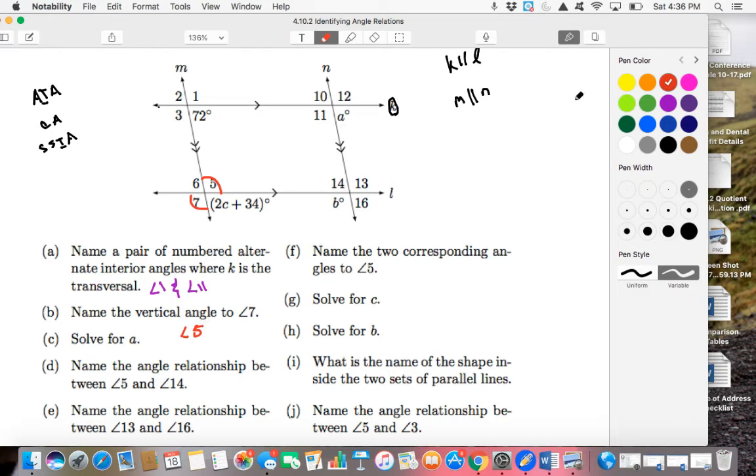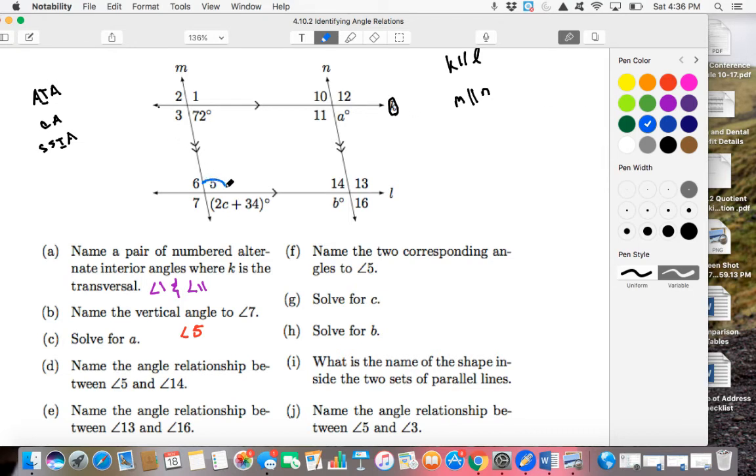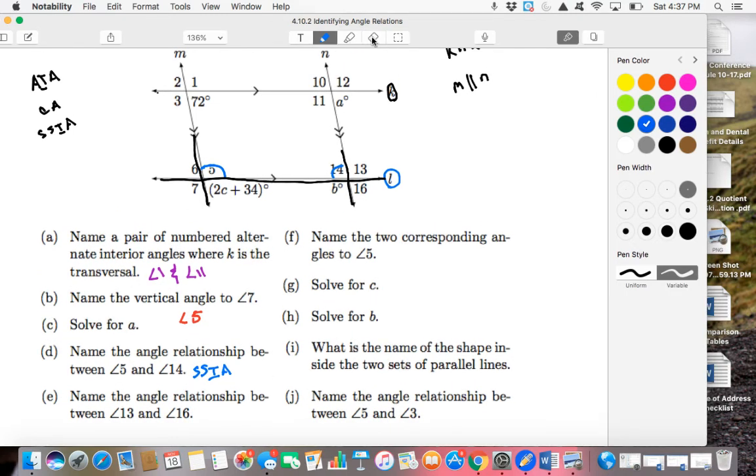Erase. Name the angle relationship between angle 5 and angle 14. Okay, so 5 and 14, where are we looking here? Here's 5 and here's 14. Well, let's first of all name our transversal. Our transversal in this case would be line 11, so we can go ahead and mark our transversal. And what are the two parallel lines the transversal cuts across? M and N. So now you can see that 5 and 14 are on the same side as the transversal and interior to the two parallel lines. So in this case, they would be same-side interior angles. That would be the name of the relationship.